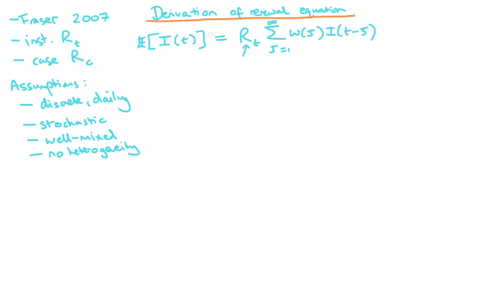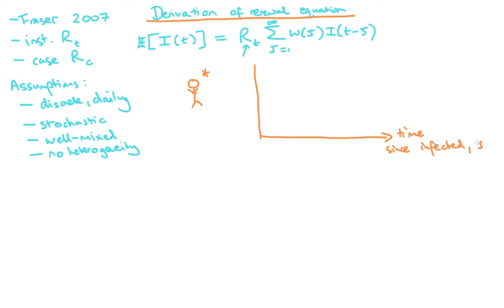We're going to imagine that an individual becomes infected with a pathogen, and we can draw a graph with time since infection, which we'll call tau, on the horizontal axis, and the infection rate on the vertical axis. This is the rate per unit time at which an individual causes infections in others, and we can imagine an infection rate graph that might look something like this.